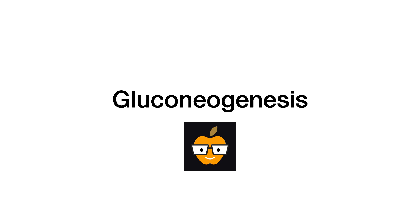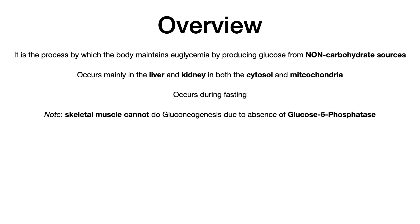In today's video, we're going to talk about gluconeogenesis. Let's start with an overview, then do a high-yield rapid review running through the pathway. I'll point out the few things you need to know so you can go into test day feeling confident you'll get 100% of your gluconeogenesis questions correct. Gluconeogenesis is the process by which the body maintains euglycemia — keeping blood sugar levels within the normal physiologic range — by producing glucose from non-carbohydrate sources.